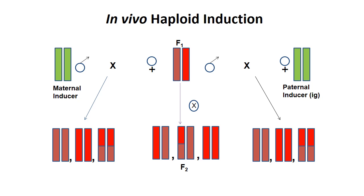This is the procedure of in vivo haploid induction. From the bulbosum technique we can identify in vivo haploid production. In the different kinds of in vivo haploid production, the common mechanism first involves maternal and paternal inducers. For example, in the Ig gene of maize, when both are brought together in F1, the two complements come from maternal and paternal. When F2 population is generated or when F1 is selfed, we can expect hybrid as well as haploid or doubled haploid.